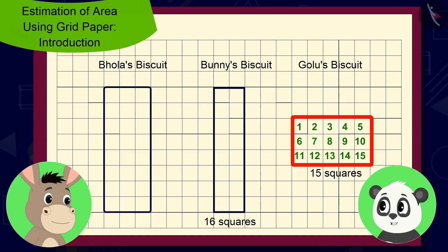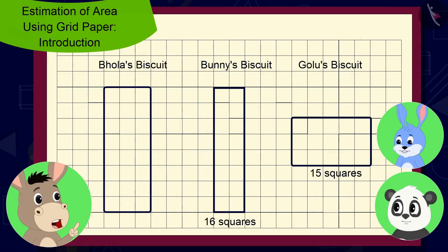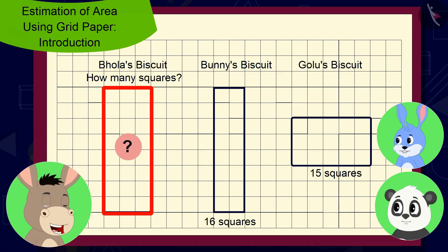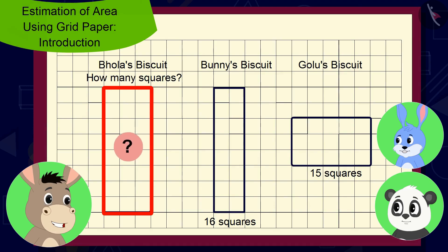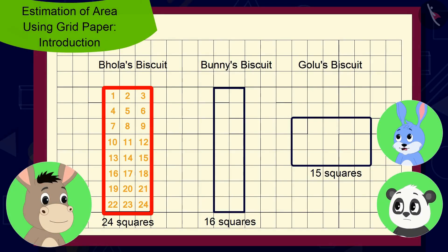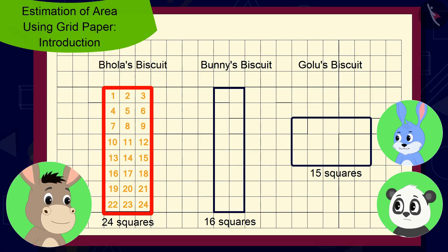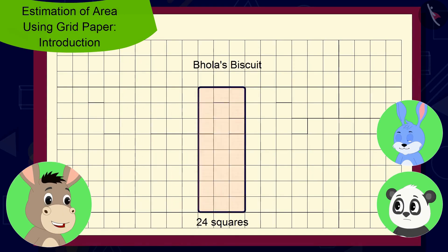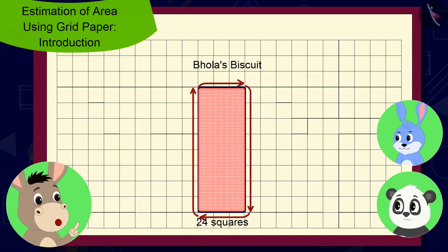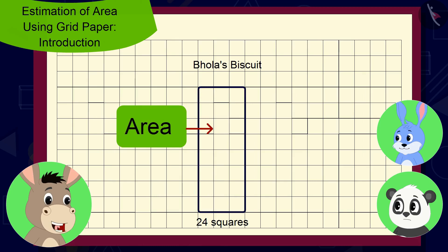Said Golu. And can you both tell me how many squares are in the shape of my biscuit? Bhola asked Bunny and Golu. 24 squares? 24 squares? said Bunny and Golu shocked. Absolutely right. And do you know that the area created inside the boundary of any shape is known as the area of that shape.